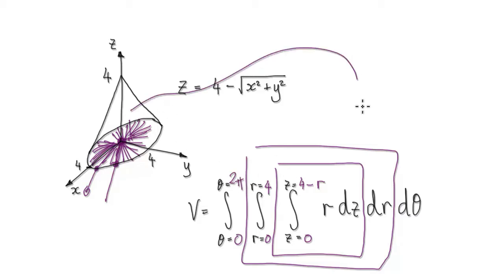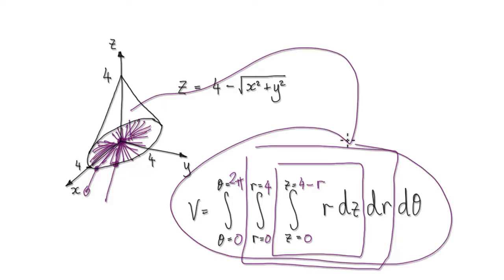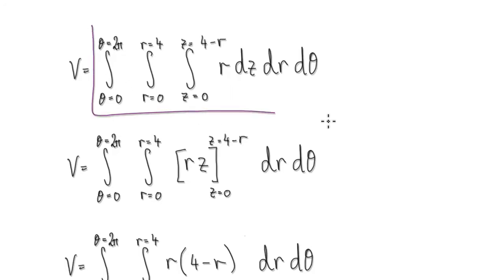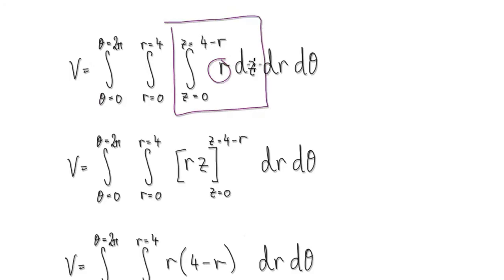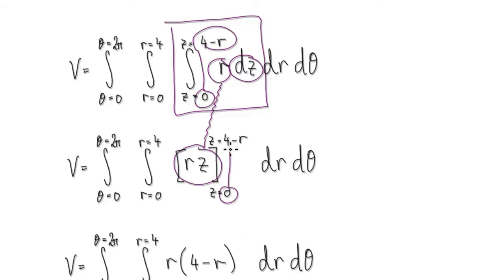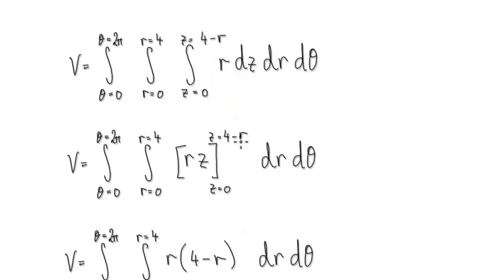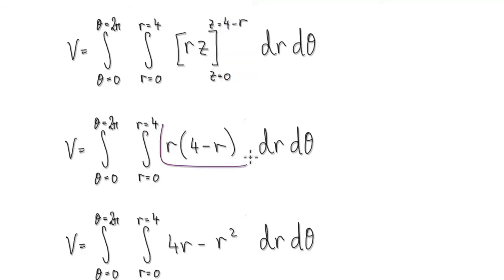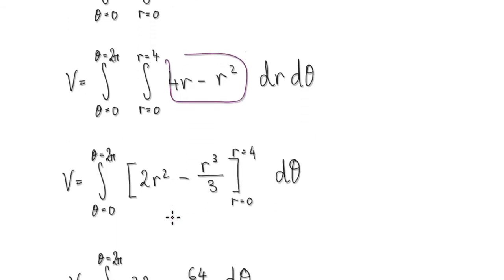So the volume of this cone is given by this whole thing here. Now the rest is just a matter of integrating. Looking at the inner integral, don't forget you've got an r here and you want to integrate with respect to z. When you integrate r with respect to z it will give you this, from 0 to 4 minus r. You would put this into the z, and that will then give you this. Multiply this out — that will then give you this. And then now integrate it with respect to r.